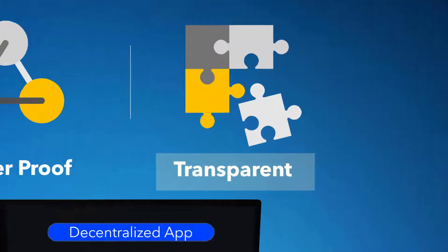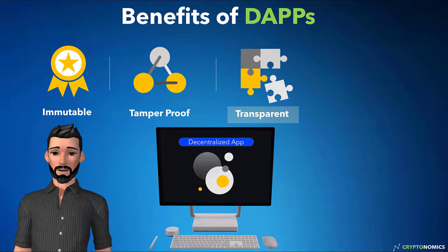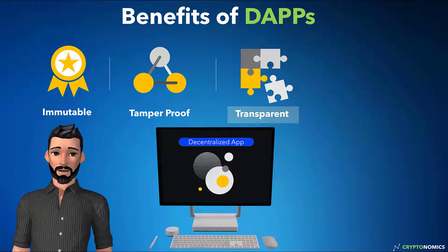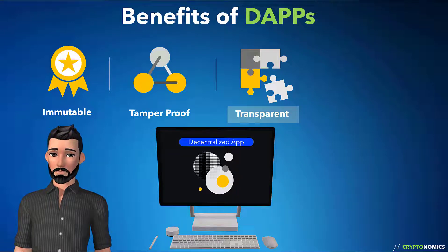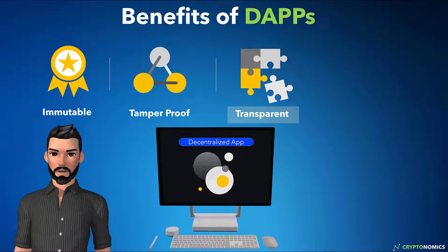DAPs are transparent. Smart contracts powering DAPs are openly auditable. They can be analyzed and guaranteed to execute in predictable ways, without the need to trust a central authority. This is not true in traditional models.